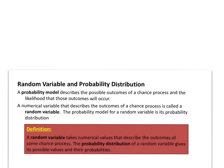Make sure you copy these two definitions down on the worksheet provided for this and the next couple of videos. A random variable takes numerical values and describes the result of some chance process. The probability distribution gives you a list of all the possible values and each of their probabilities.